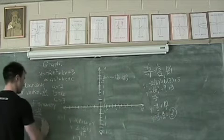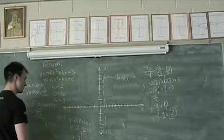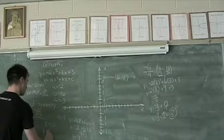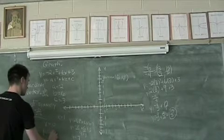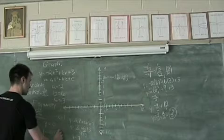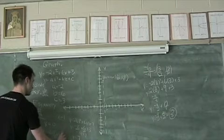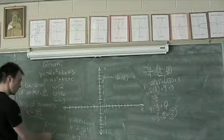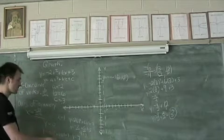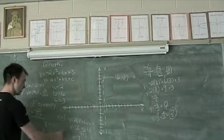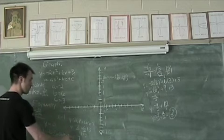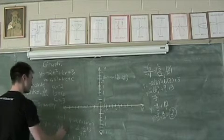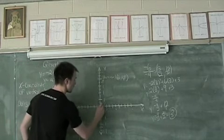And now, testing at zero. When x is equal to zero, y is going to be equal to negative two times zero quantity squared plus six times zero plus three. Maybe you've noticed it already, but anything times zero is zero. So, this is zero, six times zero, again zero, plus three. So, when x is zero, y is equal to three. And I can plot that right here.